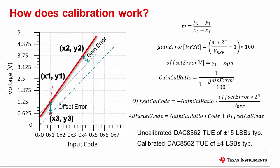For an example, let's take the DAC8562. Uncalibrated, the DAC8562 provides a TUE of 15 LSBs, but a calibrated TUE of only 4 LSBs. To illustrate, let's look at the numbers.